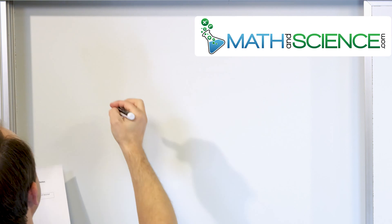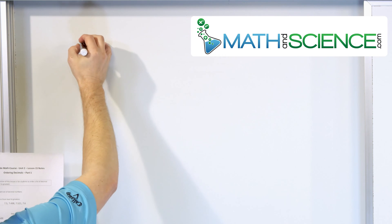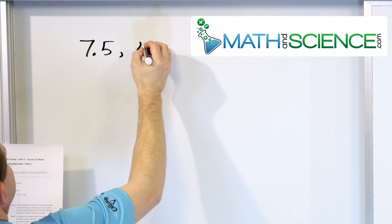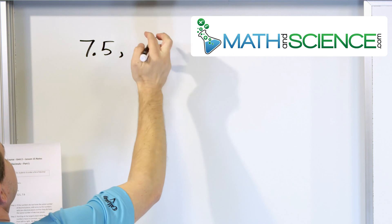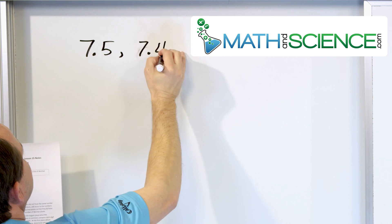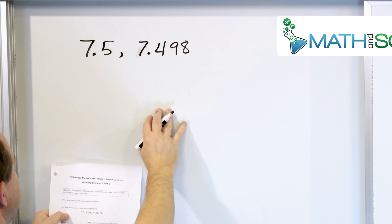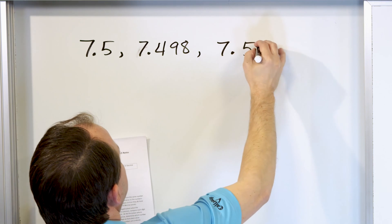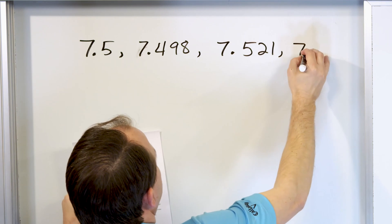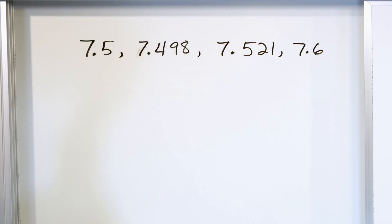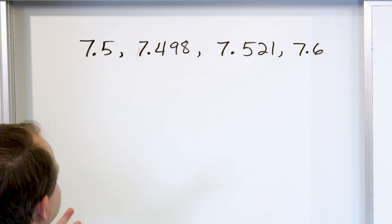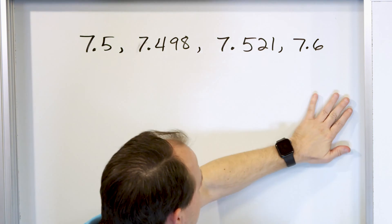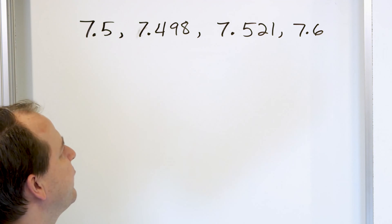Let's take a look at our first problem. We want to order the following numbers: 7.5, 7.498, 7.521, and 7.6. It's a very simple idea to write the smallest number first, then bigger, bigger, bigger, with the largest number on the right — least to greatest. That's what we want to do.